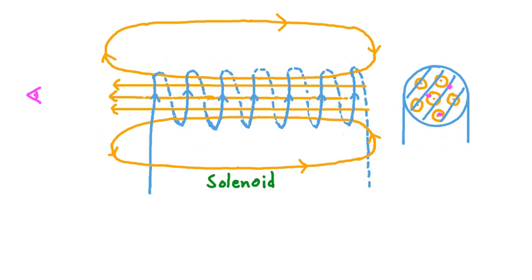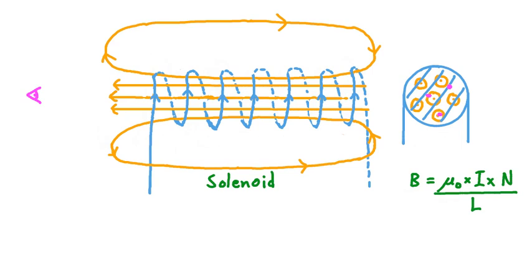There's an equation to describe the strength of the magnetic field inside the loops of the solenoid. If we call the strength of that field B, then B is equal to mu-naught — the permeability of free space, essentially how easily magnetizable free space or a vacuum is — multiplied by I, the magnitude of the current in the solenoid, times capital N, the number of loops or turns the solenoid has, all divided by the length of the solenoid along its axis, referred to as capital L.